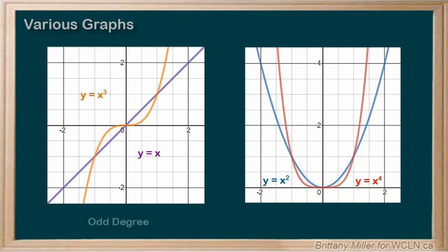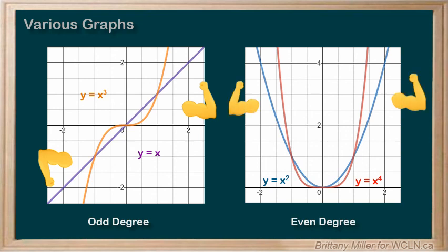When a graph has an odd degree, like 1 or 3, the arms of the graph point in different directions. When the degree is even, they'll point in the same direction. This is true for all degrees of relationships, so even though I didn't show you an example of a positive degree 5, could you make a guess about what it might look like?